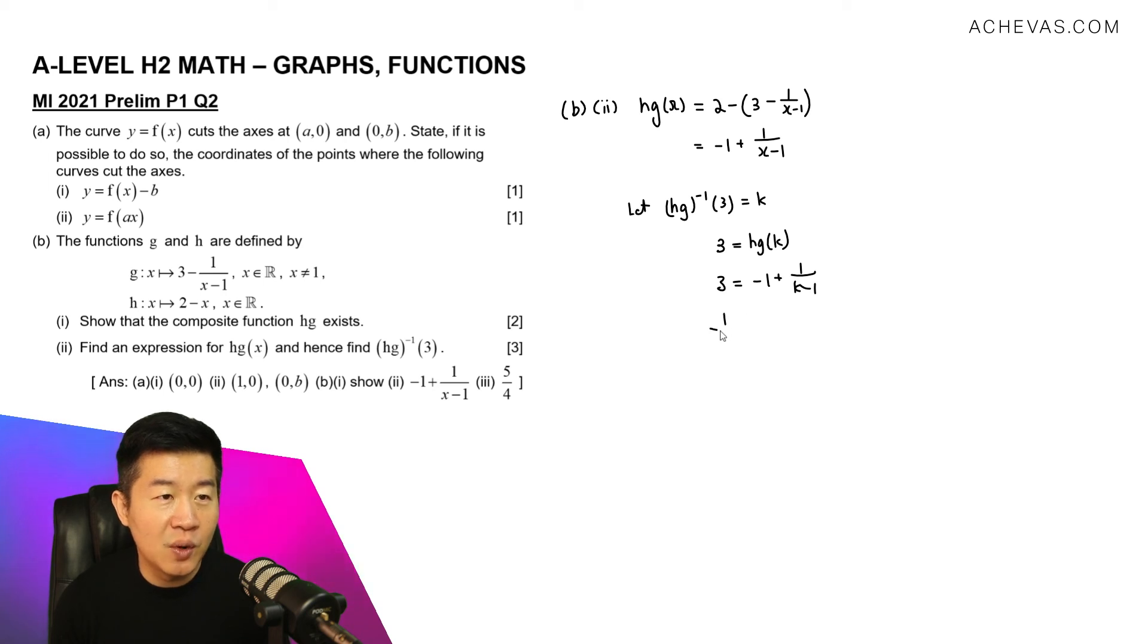Let's try to solve for this. So 1 over (k-1), this is equal to 4. Cross multiplying, 1 is equal to 4k minus 4. So 4k here is equal to 5, which tells me that k is equal to 5 over 4.